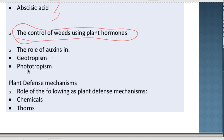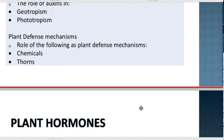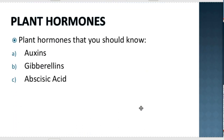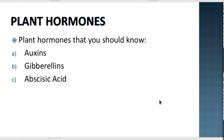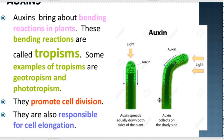We're also going to go through plant defense mechanisms, which include things like thorns and chemical attacks against when plants are being eaten. So plant hormones — the first one we're doing is auxin. Auxin brings about bending reactions in plants.